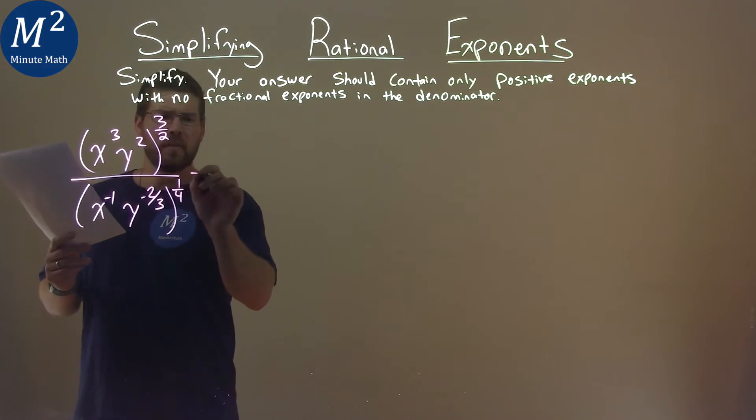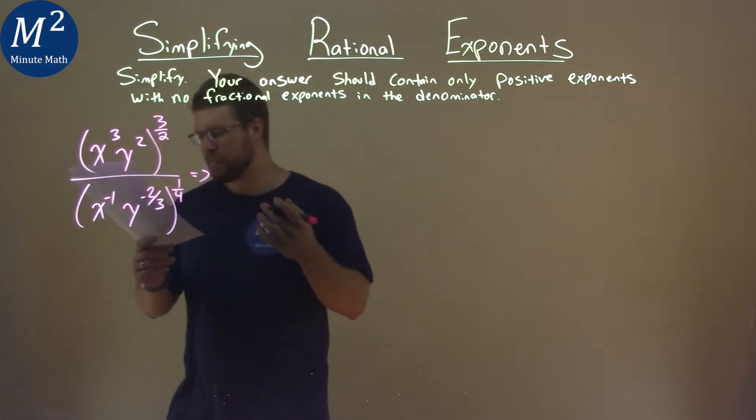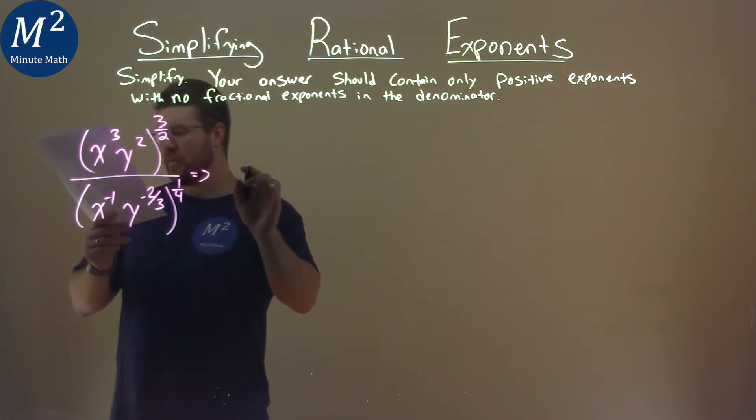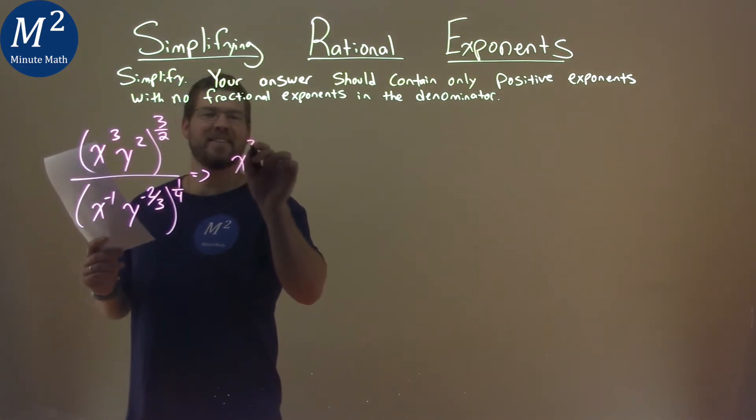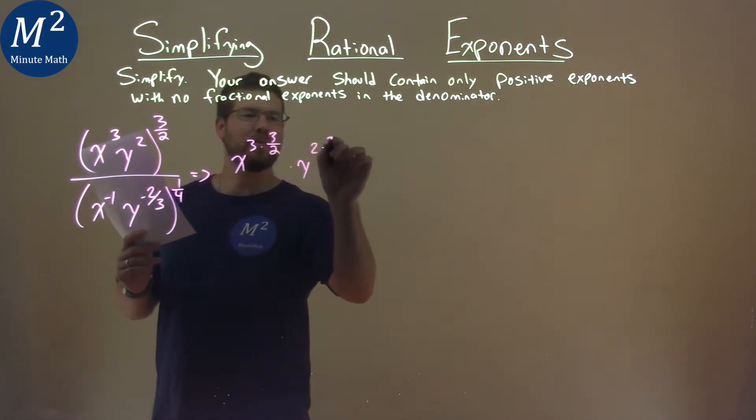First thing I want to do is multiply these exponents within it, like we're supposed to. So we have x to the three times three-halves, times y to the two times three-halves,